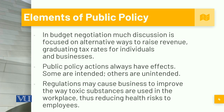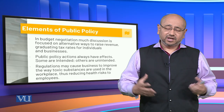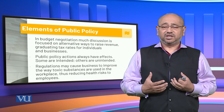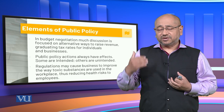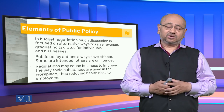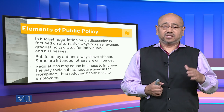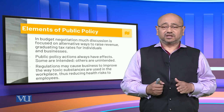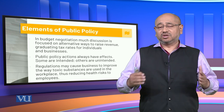Public policy actions always have effects — some are intended while others are unintended. For example, regulations may cause businesses to improve the way toxic substances are used in the workplace, thus reducing health risks to employees. We can look at a safety and security policy whereby the toxic waste of a particular industry is utilized in such a way that it reduces the health risks to employees.